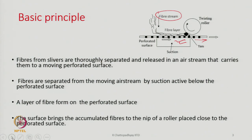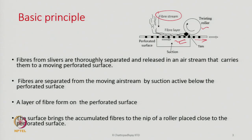All the accumulated fibers or the layer of fibers will be brought close to a twisting roller. The twisting roller is closely spaced with respect to the perforated surface — the space is very, very narrow, so narrow that the accumulated fibers cannot really pass through this gap. The accumulated fibers will come into contact with the twisting roll and gather there.